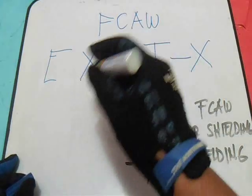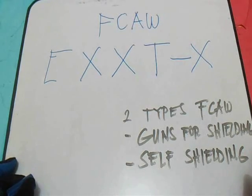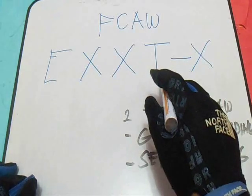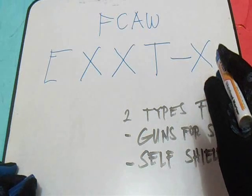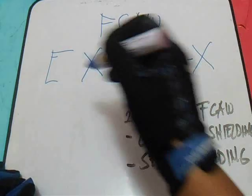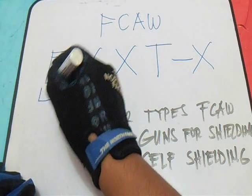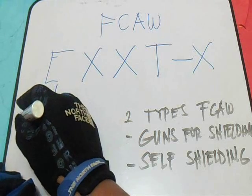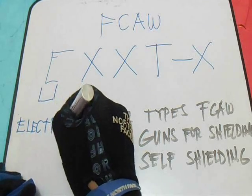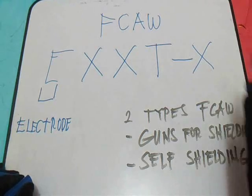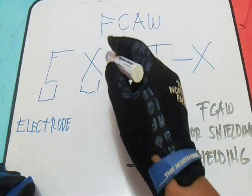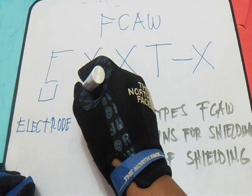Let's go back to the Identification System. In the identification system we have E, X, X, T, and X. E means electrode.